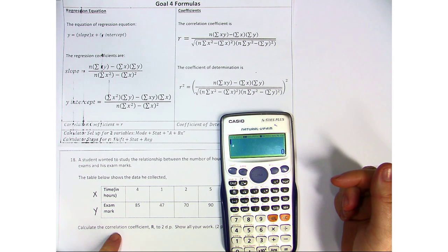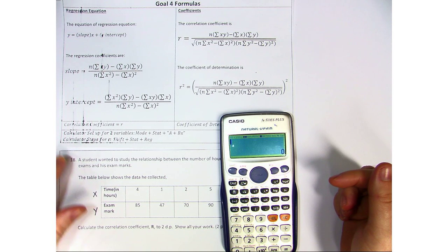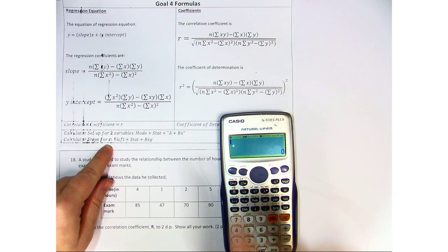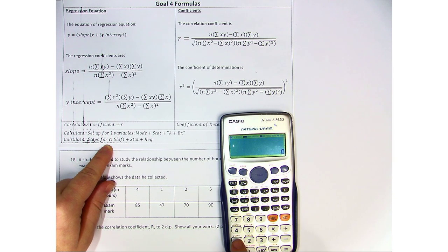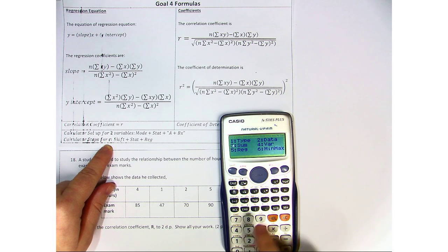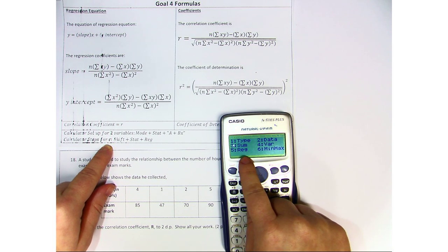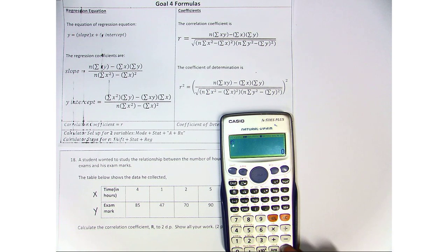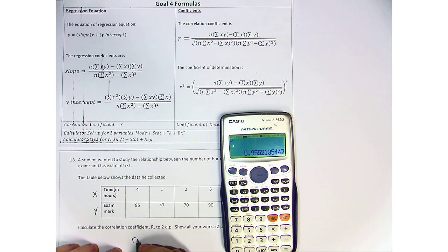We need to calculate the correlation coefficient, r. Now the calculator steps for finding r, shift, and then we have to go just above the one where it says stat, and you see where it says regression here, reg. And we can choose number 3, which is r. And it says, is this the one that you want? Yes. So I hit equals, and I get that r equals 0.9552.